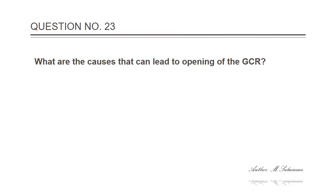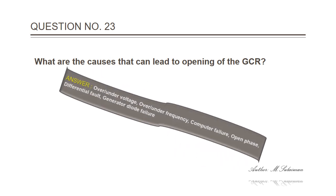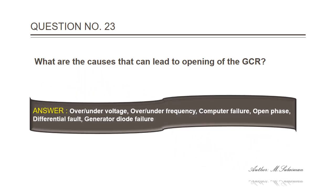Question 23: What are the causes that can lead to opening of the GCR? Answer: Over/under voltage, over/under frequency, computer failure, open phase, differential fault, and generator diode failure.